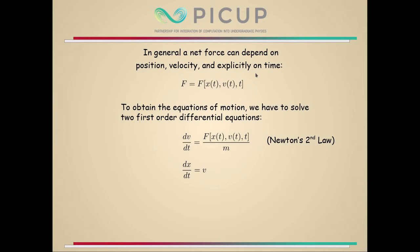Let's get started. In general, force can depend on position, velocity, and even time explicitly. I'm going to use this somewhat bulky notation, and you'll see that it can be useful when we get to the form of the Euler equation. To obtain the equations of motion of some mass subject to a net force F, we have to solve two first-order differential equations. You'll recognize the first one as Newton's second law: dv/dt equals the net force divided by m. And once we have the instantaneous velocity, we can use the definition dx/dt to solve that. Obtaining the equations of motion reduces to solving two first-order differential equations, but it could be more complicated depending on the approach we take.